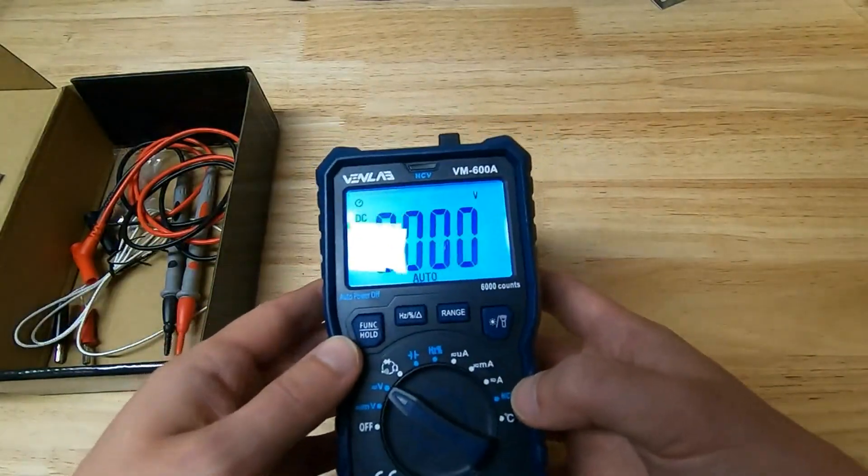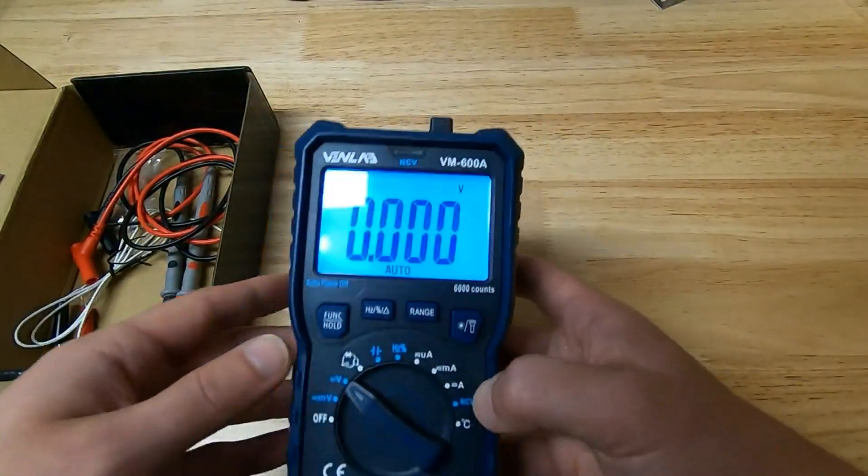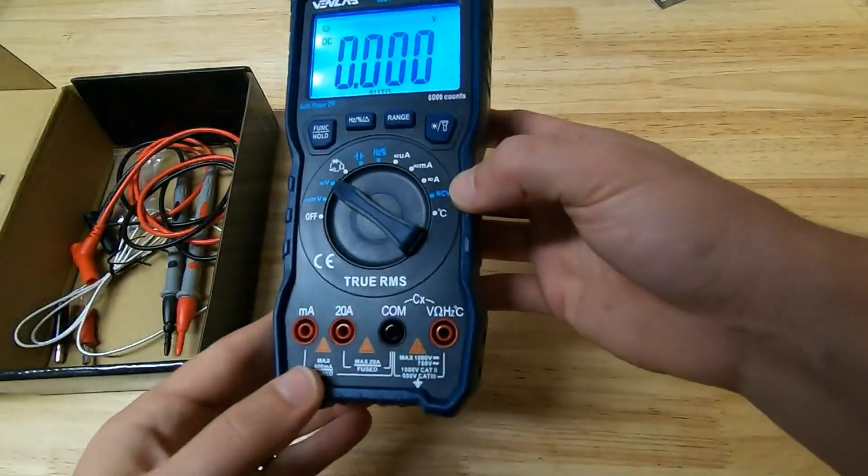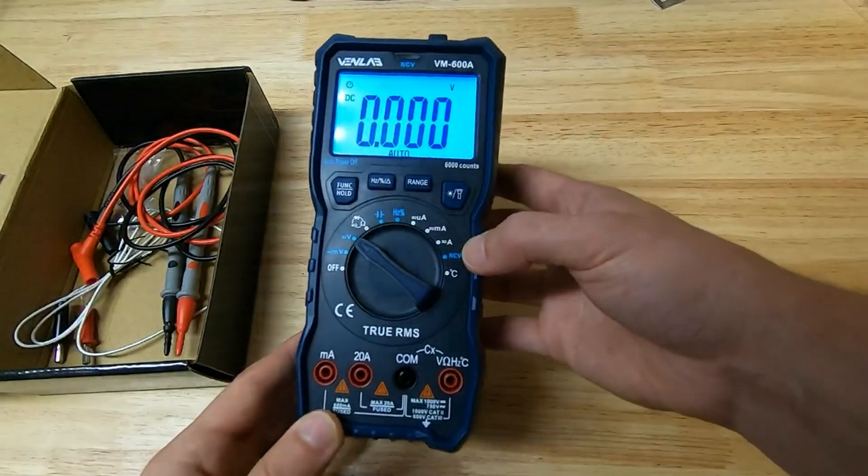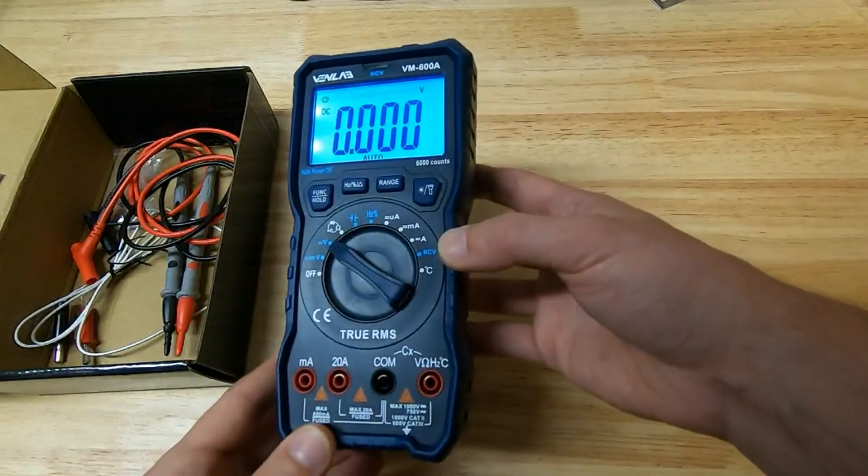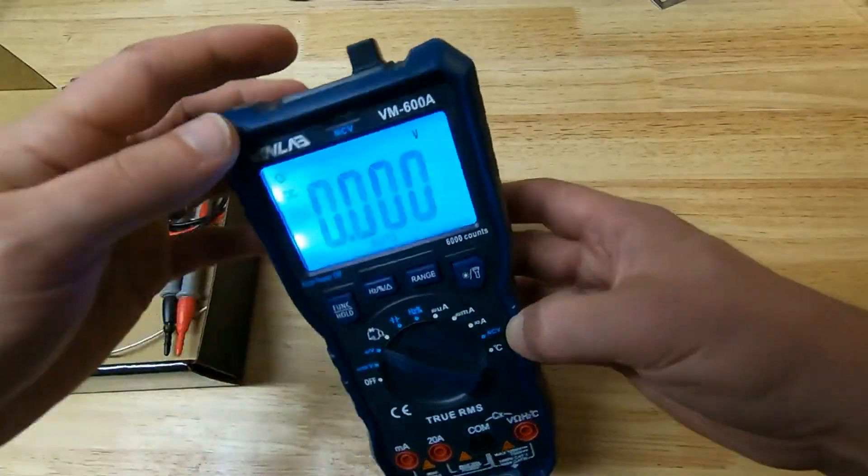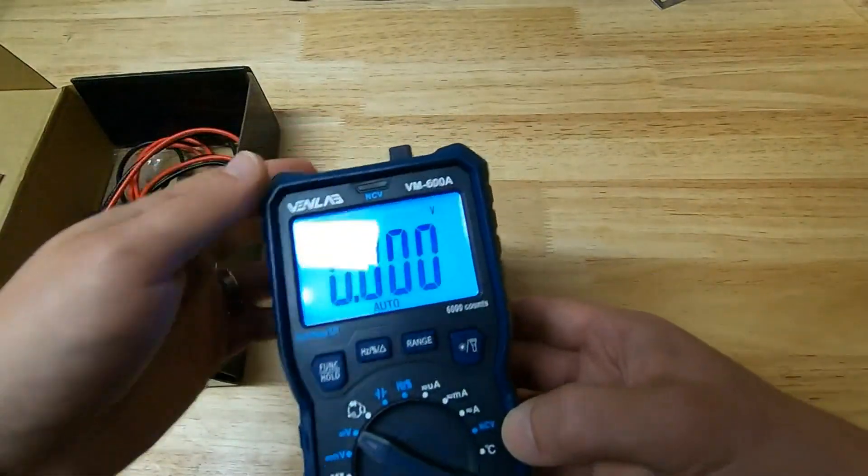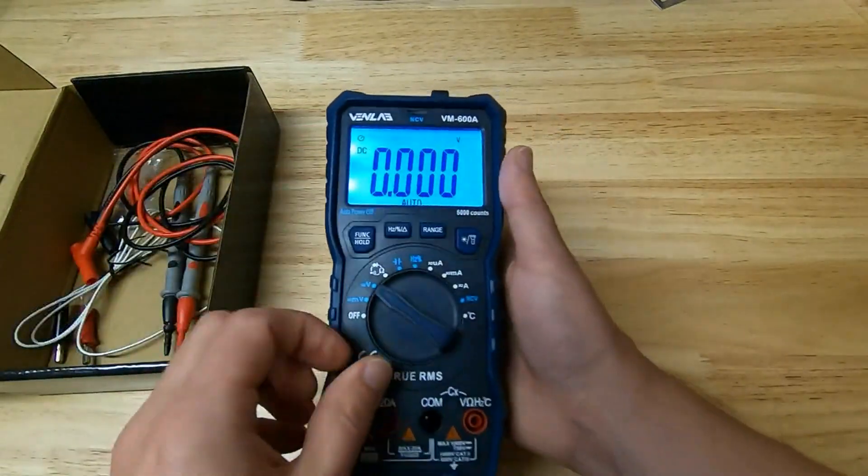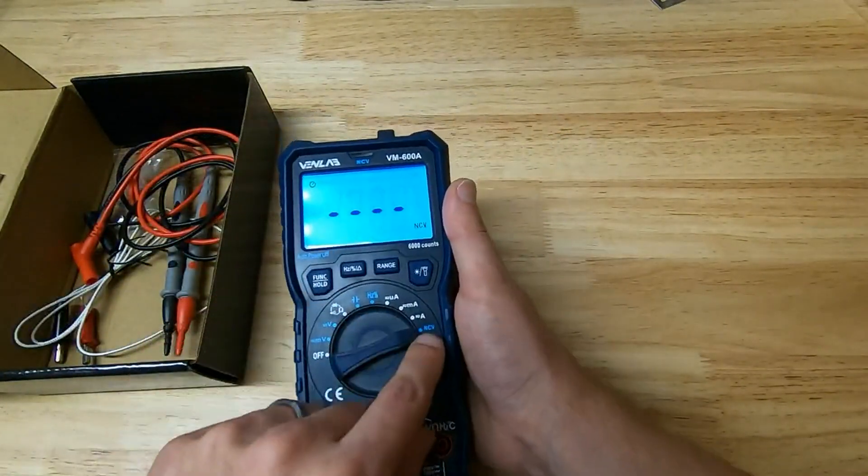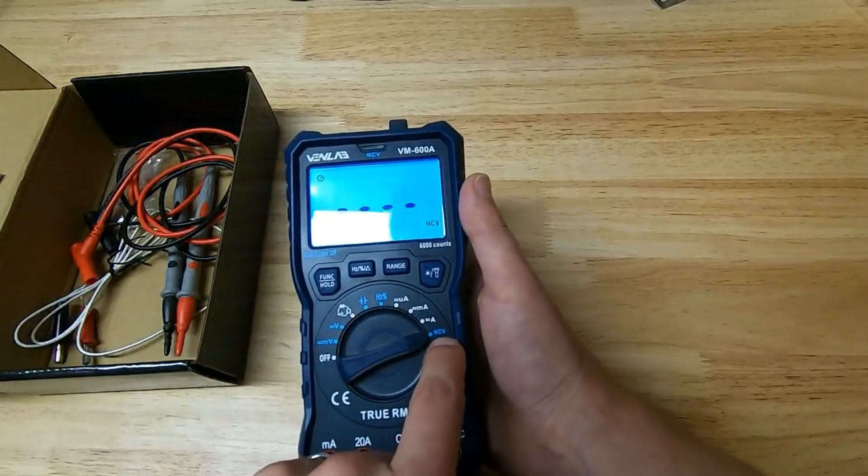And yeah, what else is there? Auto-off and ability to read DC current up to 20 amps, and a non-contact voltage sensor. So that is down here, NCV.